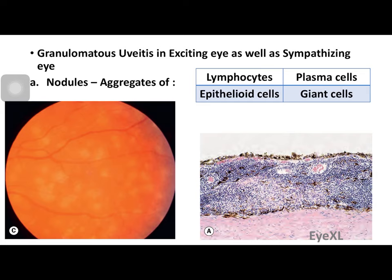Whatever the etiology, the end result is granulomatous uveitis in both the exciting eye and the sympathizing eye. The eye that sustains trauma is the exciting eye; the eye that does not have the trauma but still shows granulomatous uveitis is the sympathizing eye. The sympathizing eye is affected more severely. You get nodules consisting of lymphocytes, plasma cells, epithelioid cells, and giant cells — the small white pockmarks visible on the retina in the bottom left image.